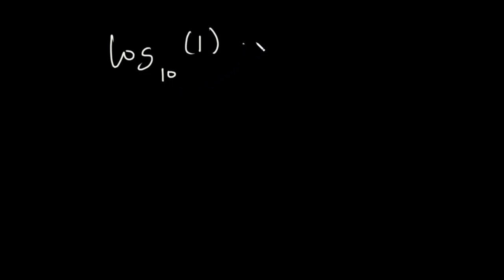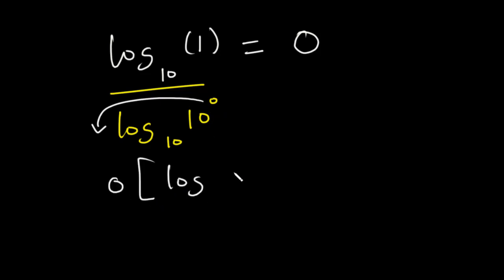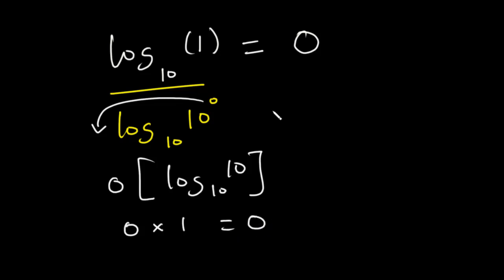Now, what is log 1 to the base 10? Log 1 to any base is equal to 0. We know that any number raised to the power 0 equals 1, so we can rewrite this as log(10^0) base 10. We transfer the 0 in front of the log to get 0 times log 10 base 10. Since log 10 base 10 is equal to 1, we have 0 times 1, which equals 0. So log 1 to any base gives you 0.